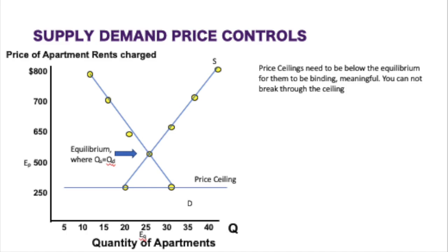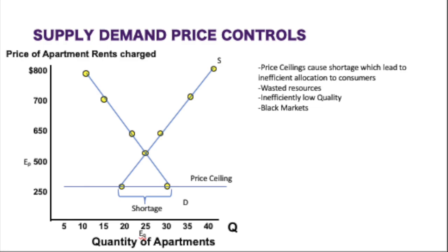In economics, the ceiling is going to be below the equilibrium point while the floor will be above the equilibrium point. Price ceilings cause shortages, which lead to inefficient allocation to consumers. You can see that in our model: at $250, you have only 20 apartments — 20 producers selling apartments at $250 — but you have 30 individuals or consumers that are willing and able to purchase at $250.